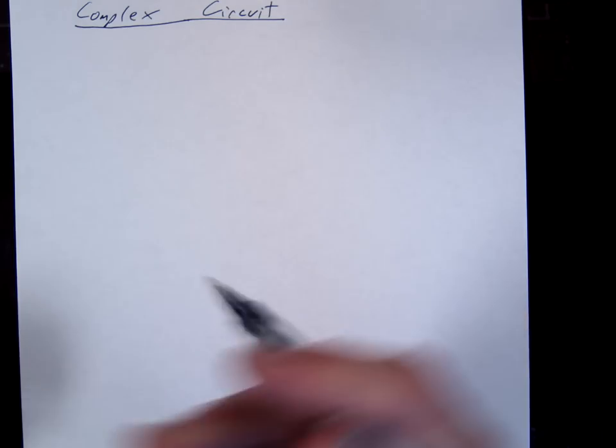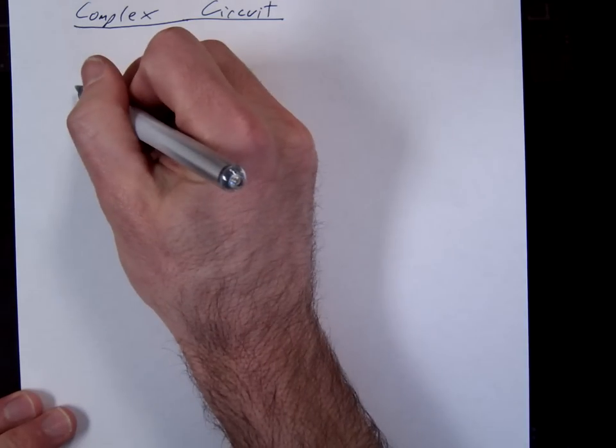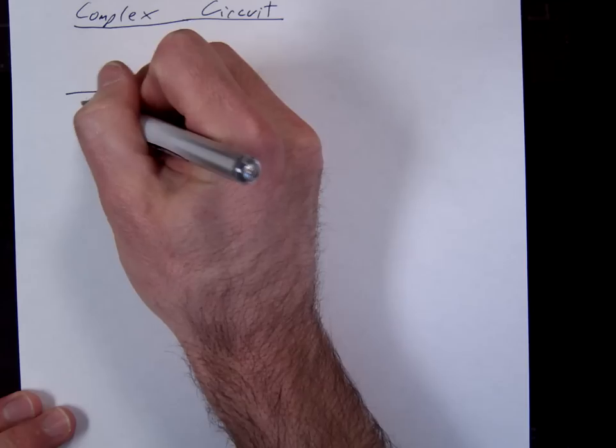Okay, so we're going to look at a complex circuit. A complex circuit means it's not series or parallel, but some combination between the two. So for example, let's say we have a circuit that looks like this.